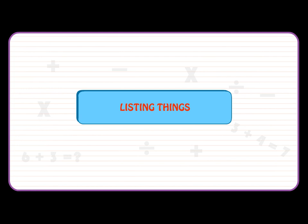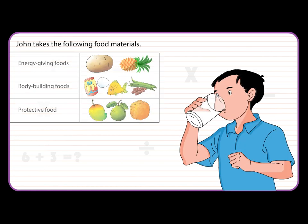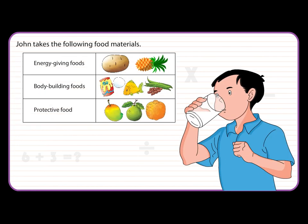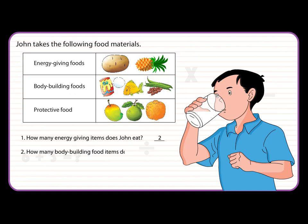Listing Things. John takes the following food materials. How many energy-giving items does John eat? The answer is 2. How many body-building food items does John eat? The answer is 5.